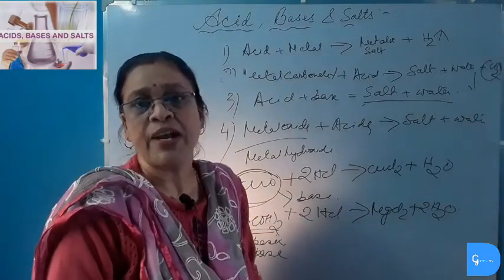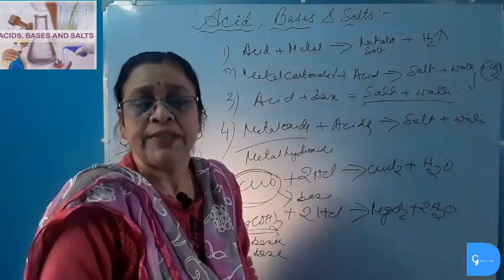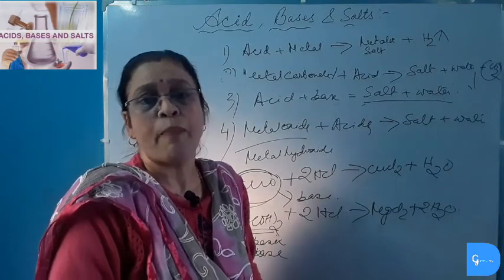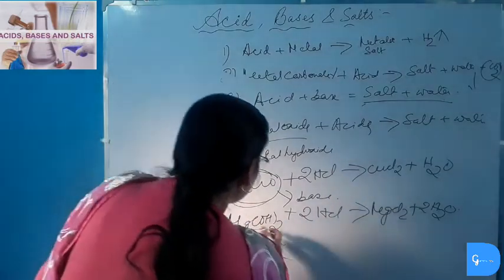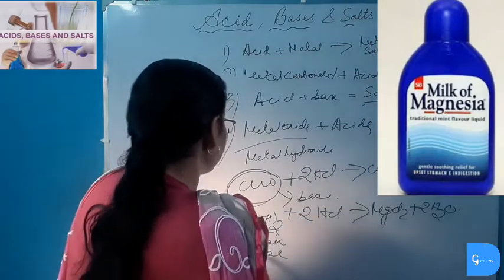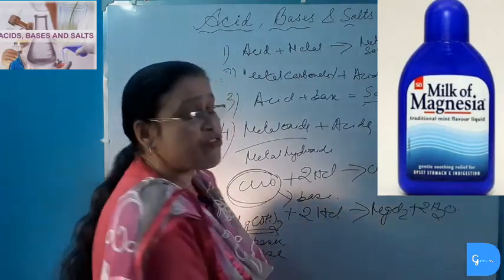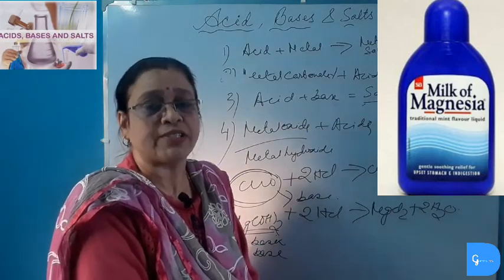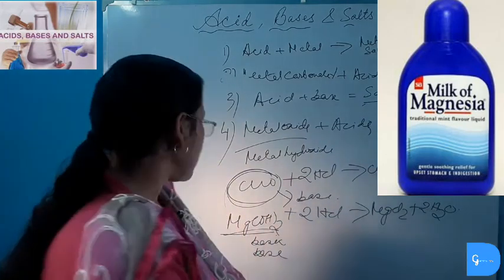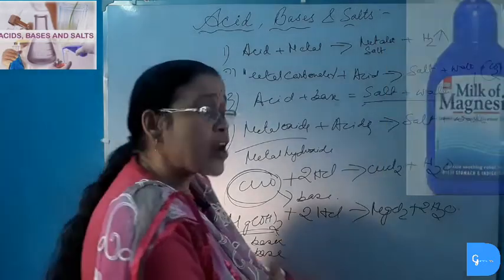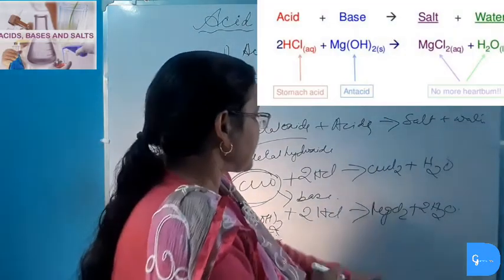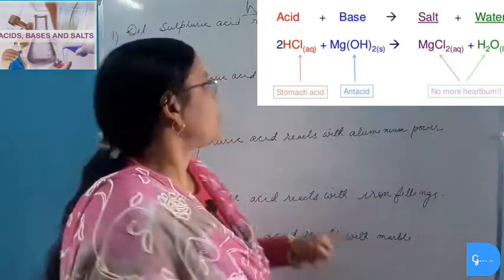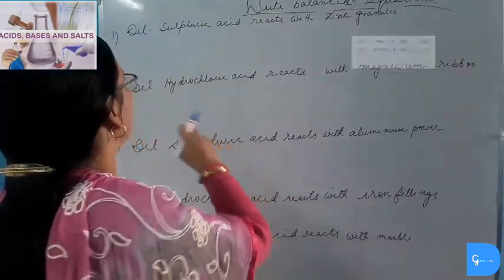When a person is suffering from indigestion, that person is often asked to take Milk of Magnesia, which is Magnesium Hydroxide. When Milk of Magnesia is taken by a person suffering from acidity, the excess Hydrochloric Acid produced by the stomach reacts with Magnesium Hydroxide, neutralizing each other to form Magnesium Chloride and water, giving the person relief from acidity. You have to write balanced equations for the following.